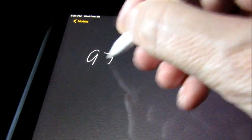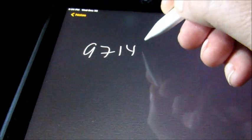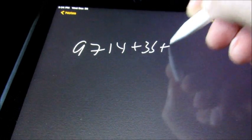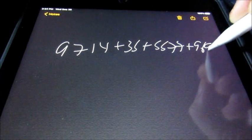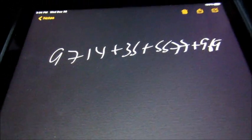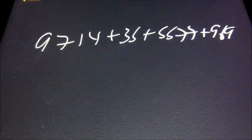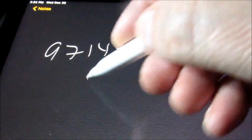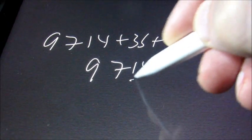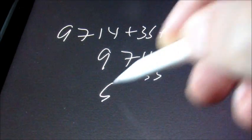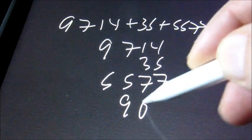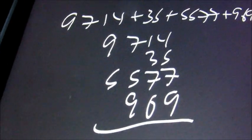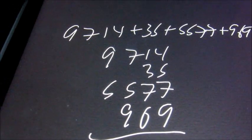Say we have 9714 plus 35 plus 5577 plus 969. We're just going to rewrite them vertically: 9714, 35, 5577, and 969. When you do this, make sure you line up the ones column.